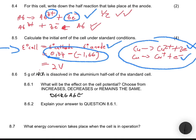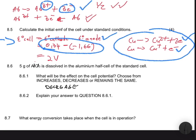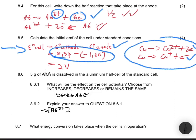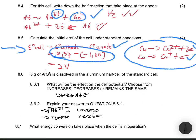For question 8.6.2, explaining the answer: the concentration of Al³⁺ increases. By Le Chatelier's principle, the reverse reaction is favoured. When the reverse reaction is favoured, the EMF decreases.